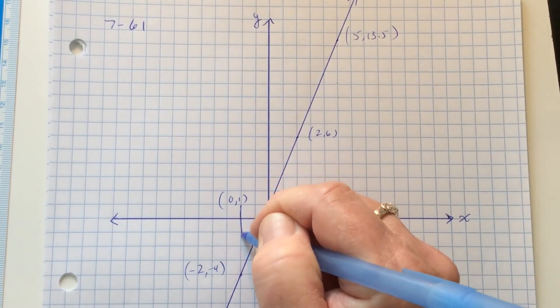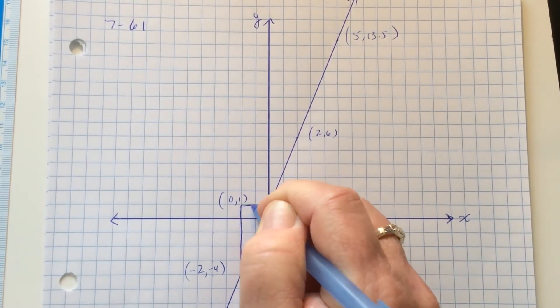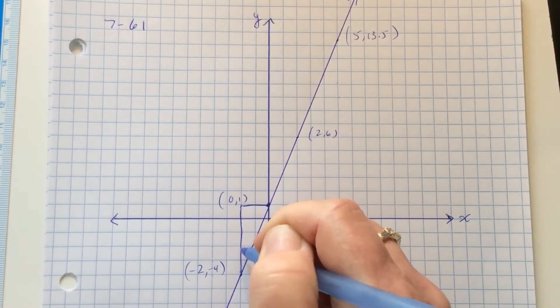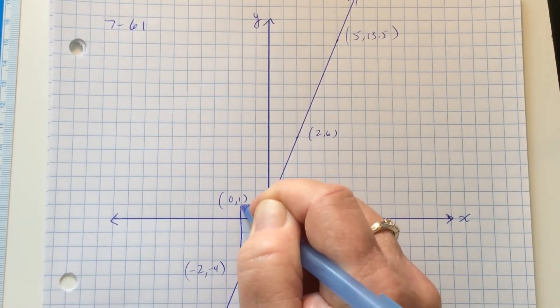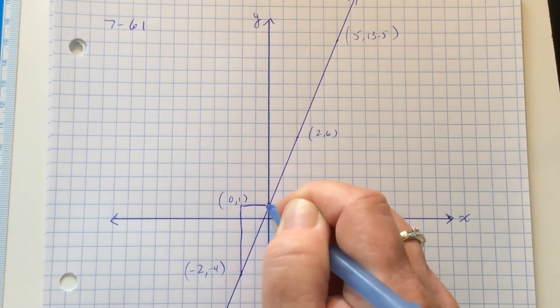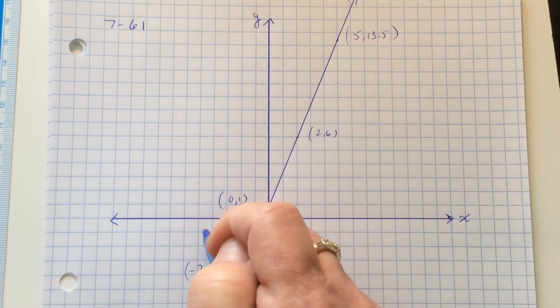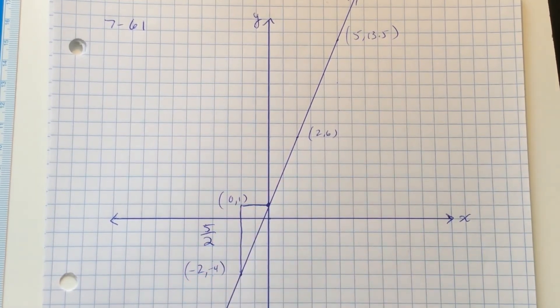One triangle I can draw is right here. From here to here I go up 5, and over 2. So that would be one ratio, would be 5 over 2.